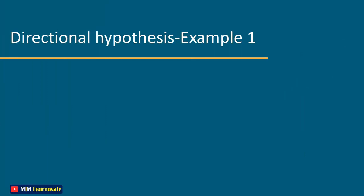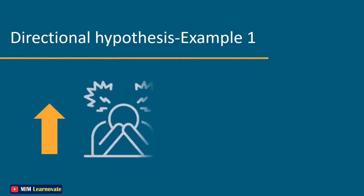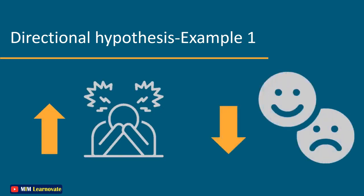Directional hypothesis example 1: The greater the stress experienced in the job, the lower the job satisfaction of employees. In this example, you can see that there is a clear direction of the relationship shown, so it is a directional hypothesis.